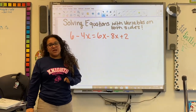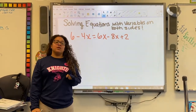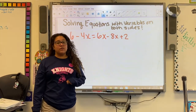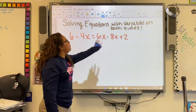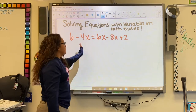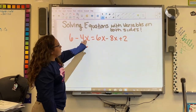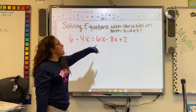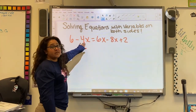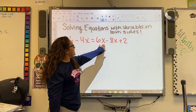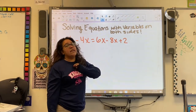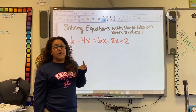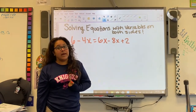Alright guys, welcome back to Miss G After 3. We're going to do a quick review of everything that we've been learning with solving equations with variables on both sides. So here we have an equation with variables on both sides — a variable on each side of the equal sign. We have 4x on this side and then here we have 6x minus 8x. The very first thing we need to do is combine like terms.